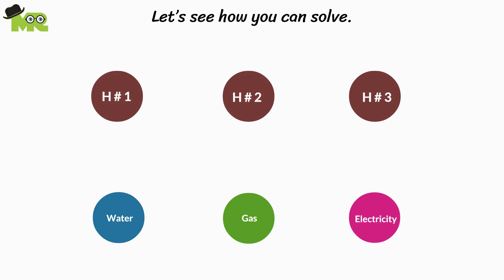The answer is tricky, yet simple. Let's see how we can manage to complete this task. First, take the water line to house number one, then take water line to house number two, and lastly, take the water line to house number three.